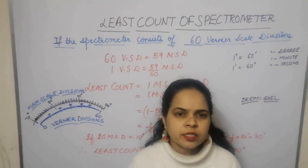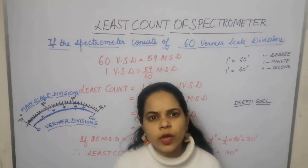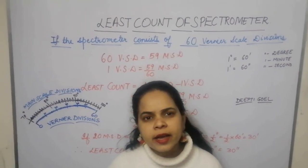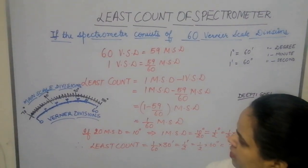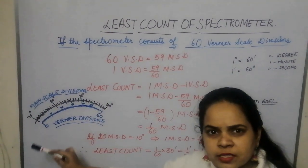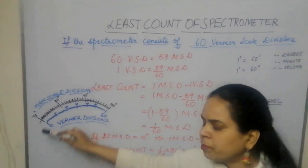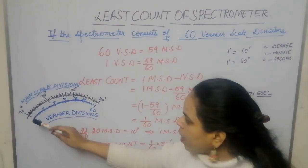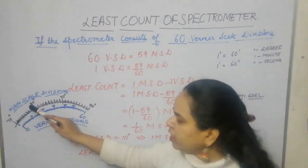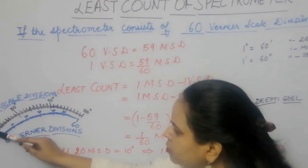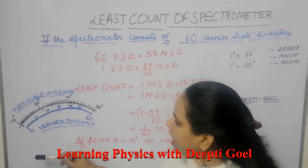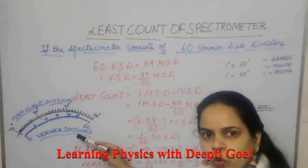How to calculate the least count of the spectrometer. When you look inside the vernier, you see two scales — the main scale and the vernier scale. The main scale is a circular scale comprising a total of 360 degrees. Between 70 degrees and 80 degrees there are 20 divisions, and likewise there are 20 divisions between every 10 degrees.